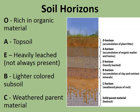This brings us to soil horizons, which are just layers of the soil. In the picture, you have the O, A, E, B, and C layers, and then a solid parent material of the bedrock — sometimes called the R layer. The E layer isn't always present. Then you have a lighter-colored subsoil, and then your weathered parent material where rocks are breaking apart and becoming soil.